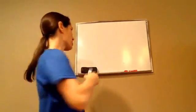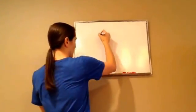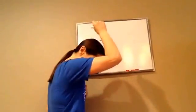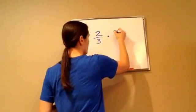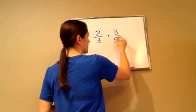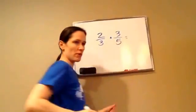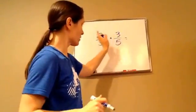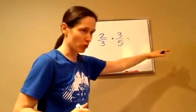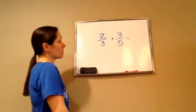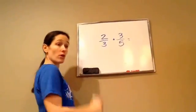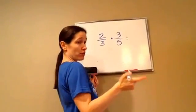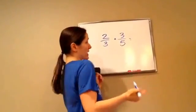Let me walk through something really quick. If I had 2 thirds times 3 fifths, do you remember a simpler way before we multiply what I can do? Cross multiply and reduce — to cross out and reduce. That's called canceling.